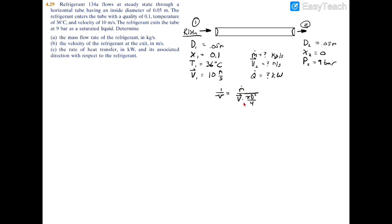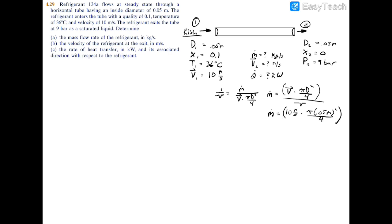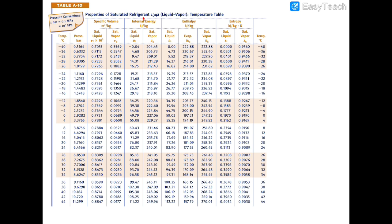Rearranging, the mass flow rate equals velocity times area divided by specific volume. Plugging in: m-dot equals 10 meters per second times pi times 0.05 meters squared divided by 4, all divided by the specific volume at state 1. To find that specific volume, we use x1 equals 0.1 and T1 equals 36 degrees Celsius, turning to Table A10 for saturated refrigerant R134A properties.